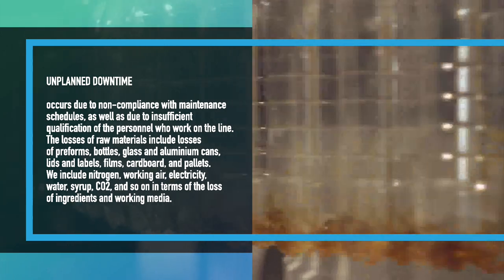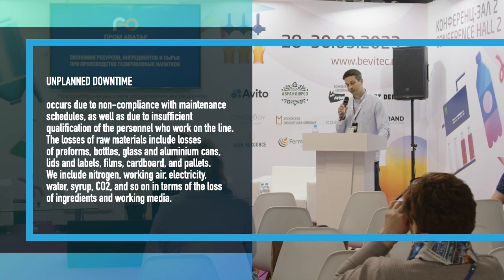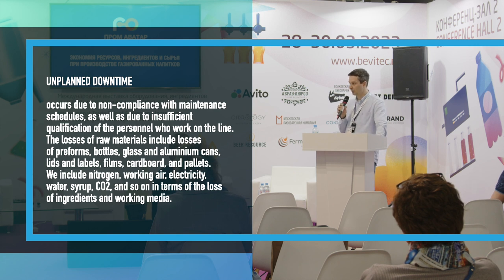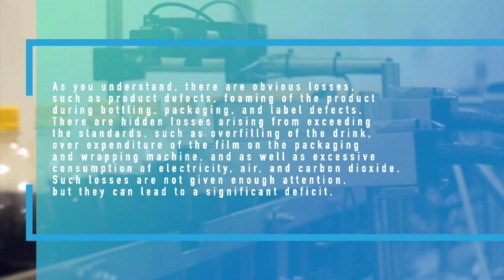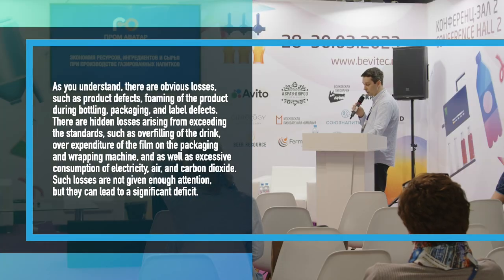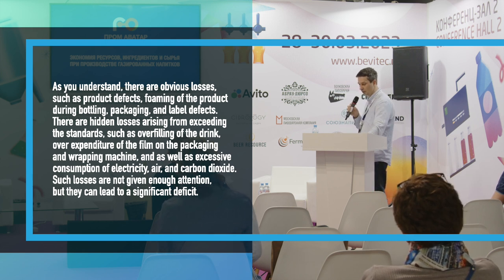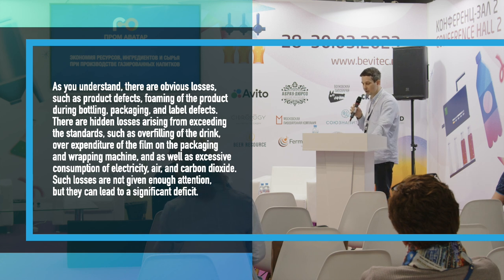The losses of raw materials include losses of preforms, bottles, glass and aluminium cans, lints and labels, films, cardboard and pallets. We include nitrogen, compressed air, electricity, water, syrup, CO2 and so on in terms of the loss of ingredients and working media. There are obvious losses such as product defects, foaming of the product during bottling, and packaging and label defects. There are also hidden losses arising from exceeding the standards, such as overfilling of the drink, over-expenditure of film on the packaging and wrapping machine, and excessive consumption of electricity, air and carbon dioxide. Such losses are not given enough attention but they can lead to a significant deficit.